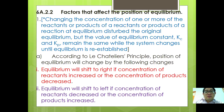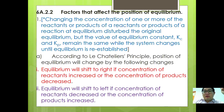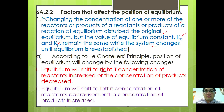We will study the factors that affect the position of equilibrium: concentration, pressure, and temperature. Changing the concentration of one or more reactants or products disturbs the original equilibrium, but the value of KC and Kp remains the same. According to Le Chatelier's principle, equilibrium shifts to the right if reactant concentration increases or product concentration decreases, and shifts to the left if reactant concentration decreases or product concentration increases.